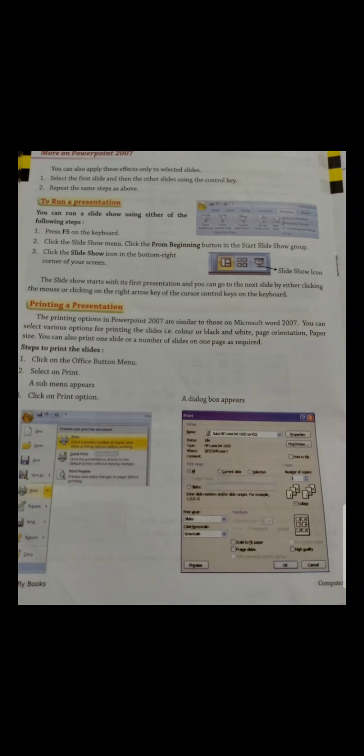So those are the three steps to run a presentation: you can press F5 on the keyboard, click on the Slideshow menu, or click on the Slideshow icon. The slideshow starts with the first slide, and you can go to the next slide by either clicking the mouse or pressing the right arrow key on the keyboard.